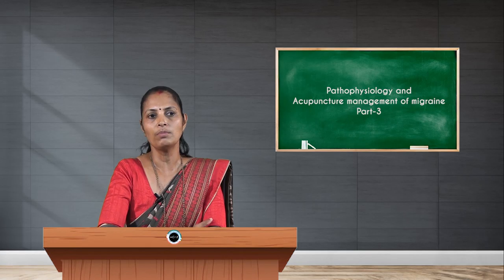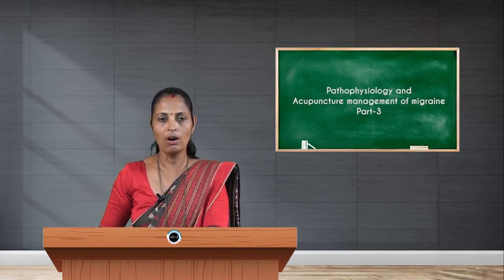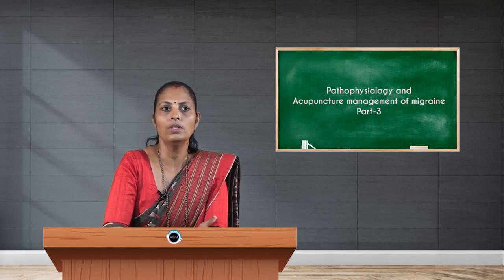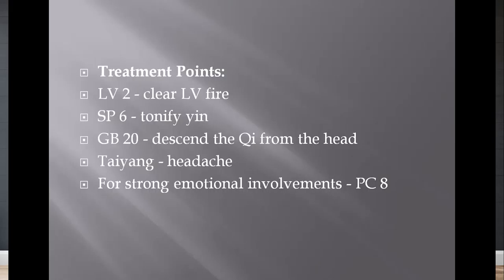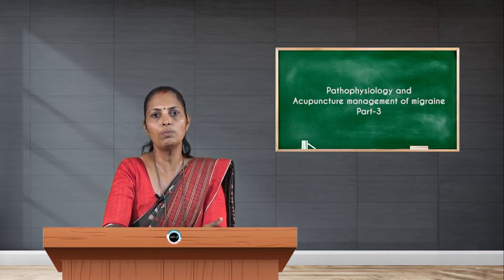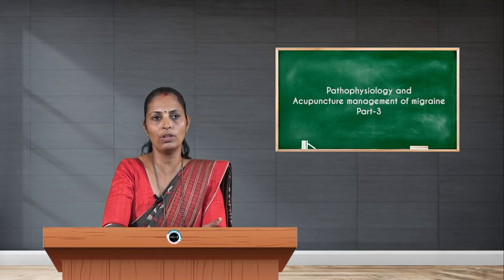The pulse may be wiry, rapid, or forceful. Treatment options: Liver 2, which is located 0.5 cun proximal to the first web space of the toes — that is in between the great toe and the second toe of the foot. Locate the margin of the web space and consider 0.5 cun proximal on the dorsum of the foot, which helps to clear the liver fire. Spleen 6 helps to tonify.